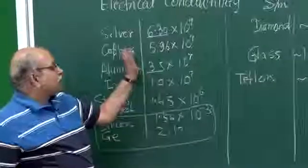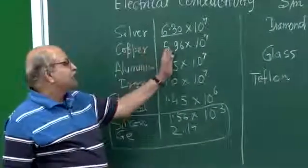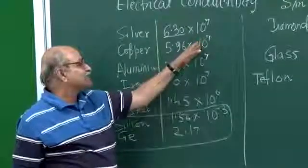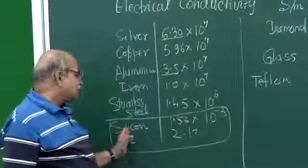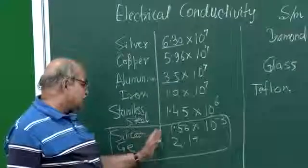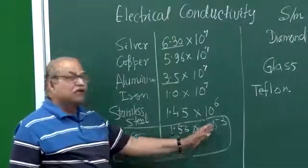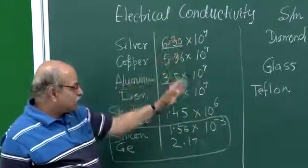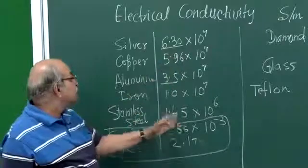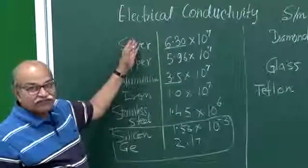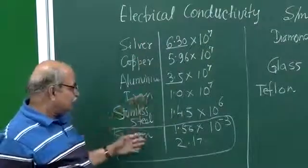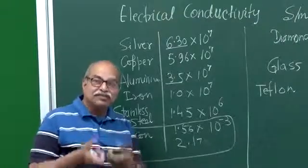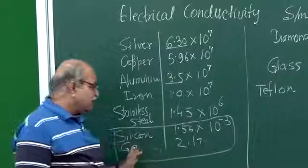You can see, if you compare with copper. Copper conductivity is 10 power 7, 5.96 into 10 power 7. And silicon conductivity is 1.56 into 10 power minus 3. Almost 10 to the power 11 times smaller than silver. This is silicon.